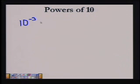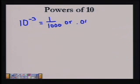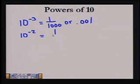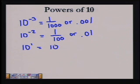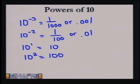When we talk about moving the decimal, we're really multiplying by powers of 10. For example, 10 to the negative 3rd power means the same as 1 over 1,000, or .001, so we would be multiplying by .001. 10 to the negative 2nd is 1 over 100, or .01, which means you would be multiplying by .01. 10 to the 1st power is just 10, which means you would be multiplying by 10. 10 to the 2nd would be 100, which means you're multiplying the problem by 100.